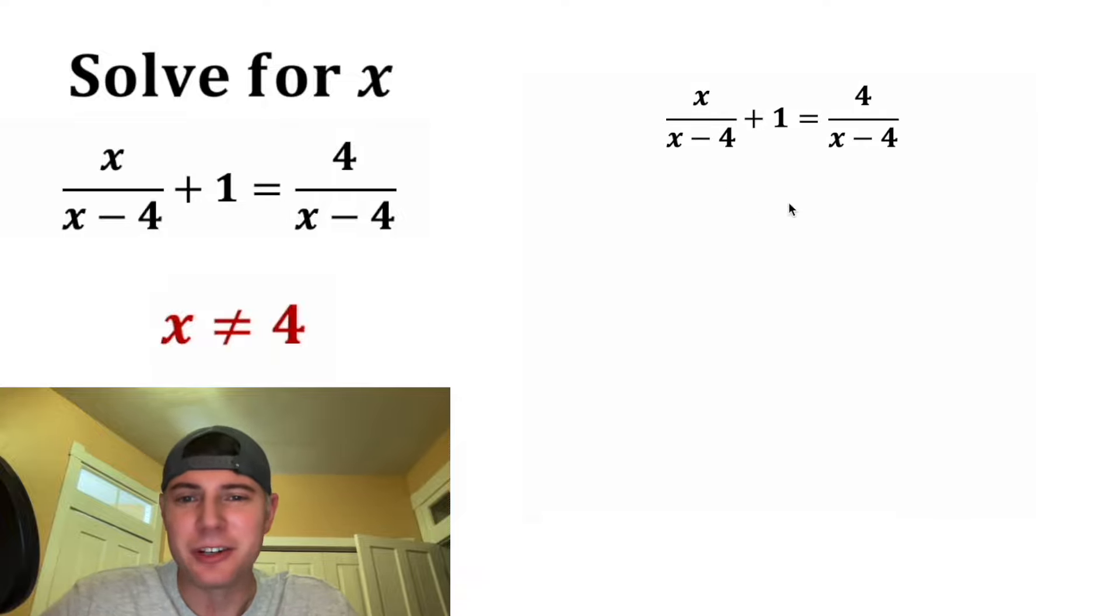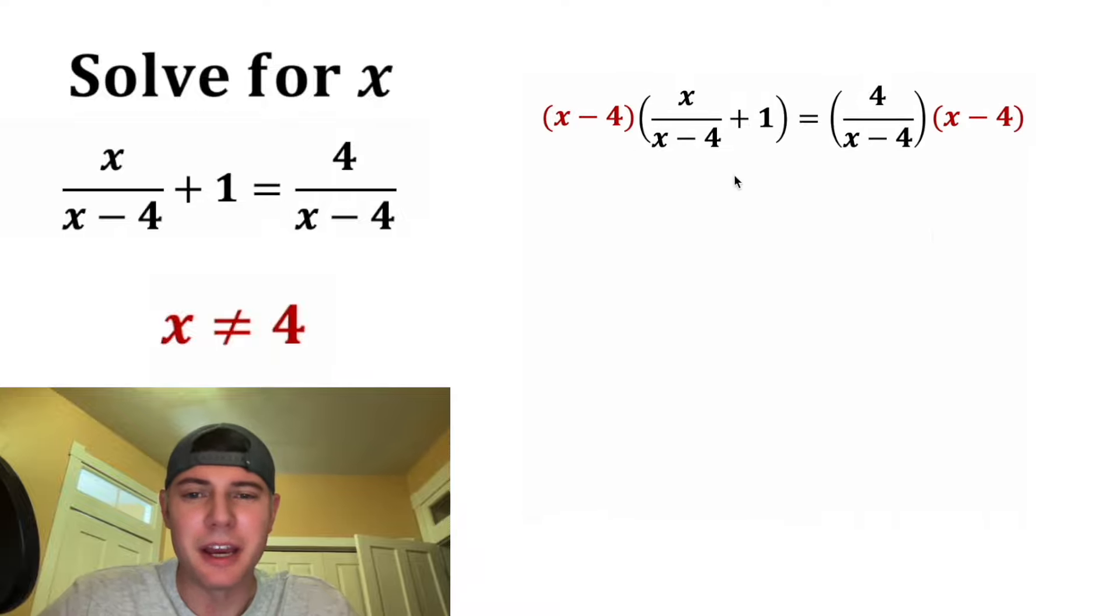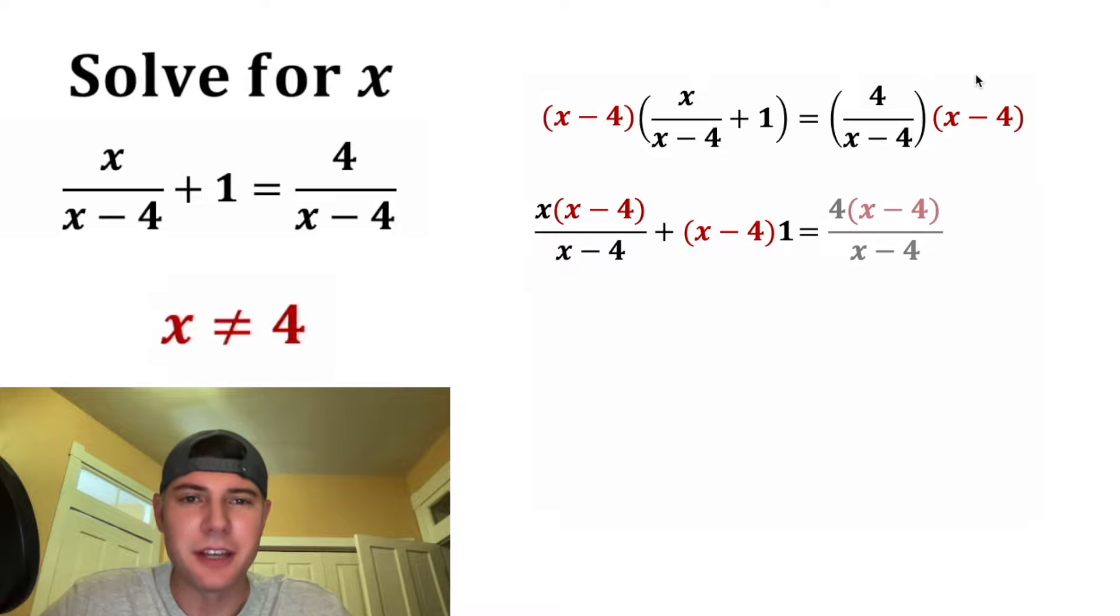Next, I don't really like fractions, so let's get rid of these denominators. We can do that by multiplying both sides of the equation by x minus 4. On the left-hand side, this x minus 4 will distribute to both of these terms. It'll distribute to the first term and to the second term. And on the right-hand side, it's just going to be 4 times x minus 4.